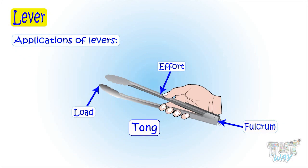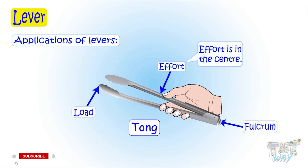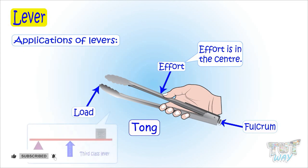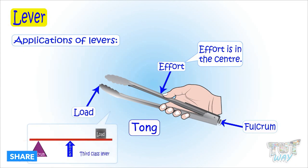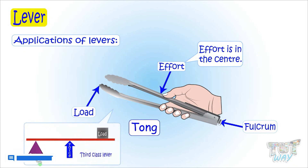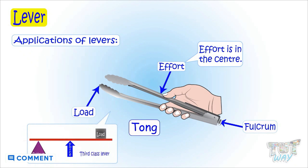So it has fulcrum, effort, and load, and here effort is in the center. We learned that third-class levers have effort in the center, so the tongue is an example of a third-class lever. Let's have a look at another such example.